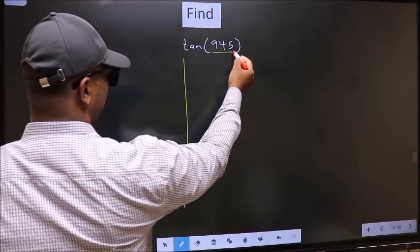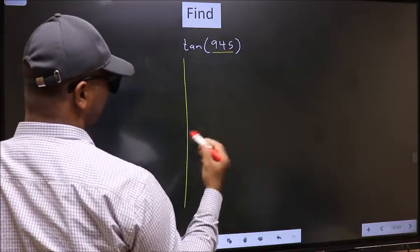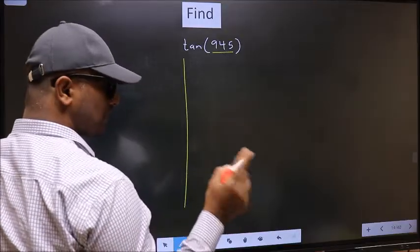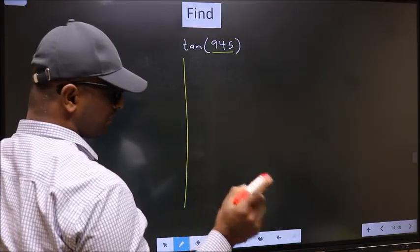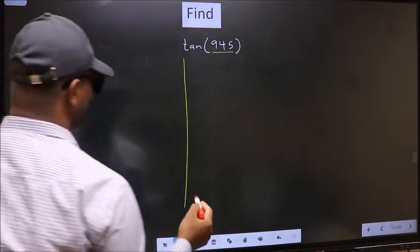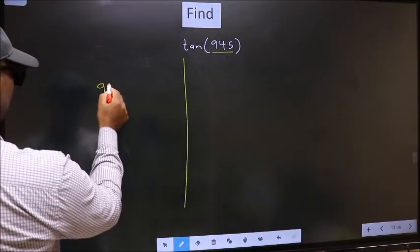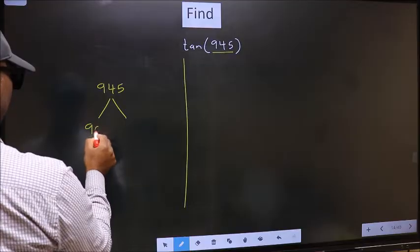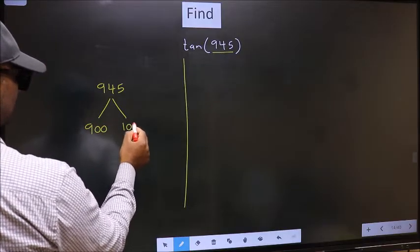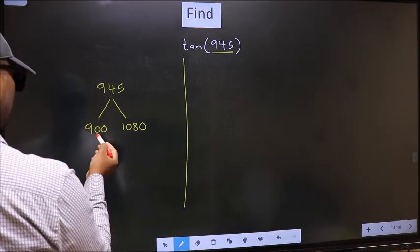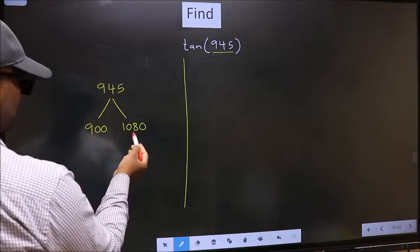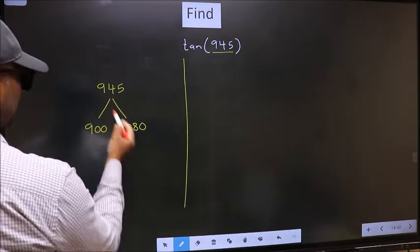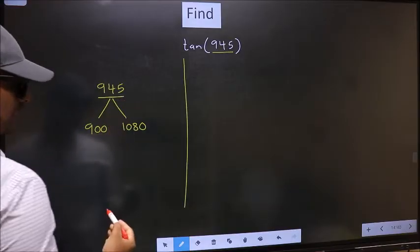Here we have 945. Now we should check 945 lies between which two multiples of 180. What I mean is 945 lies between 900 and 1080. This is 180 × 5 and this is 180 × 6. Between these two numbers 945 lies.